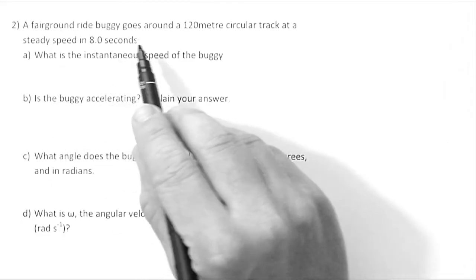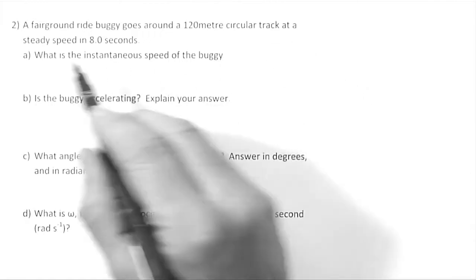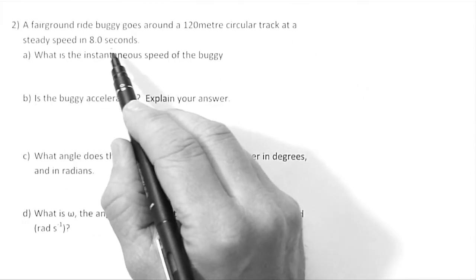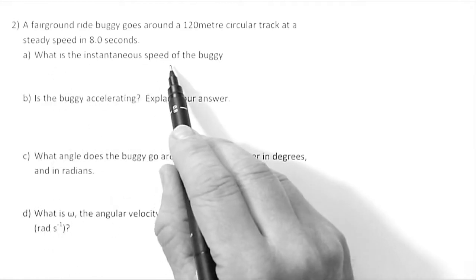A fairground ride buggy goes around a 120 metre circular track at a steady speed in 8.0 seconds. What is the instantaneous speed of the buggy?